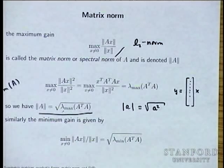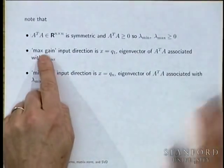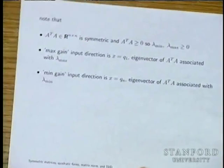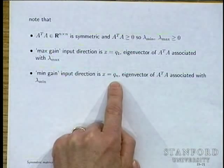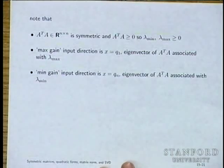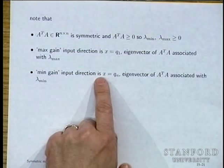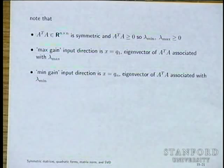The matrix norm tells you exactly what the maximum amplification factor of a matrix is when considered as a mapping y = Ax. The maximum gain input direction is the eigenvector of A transpose A associated with λ_max. The minimum gain direction is q_n, the eigenvector associated with λ_min. This can be zero, which is a long-winded way of saying A has a null space — the gain is zero, generalizing the qualitative idea of null space.